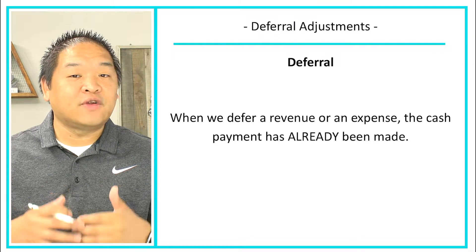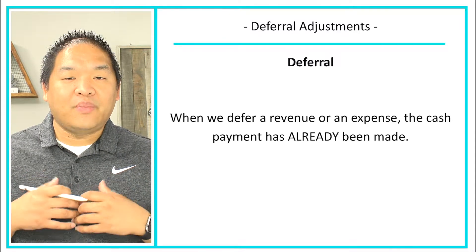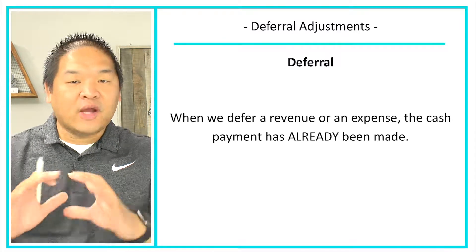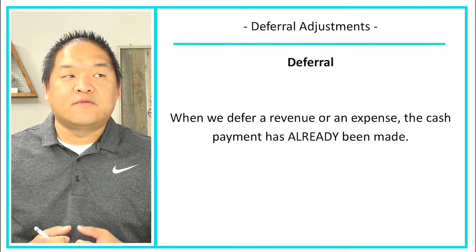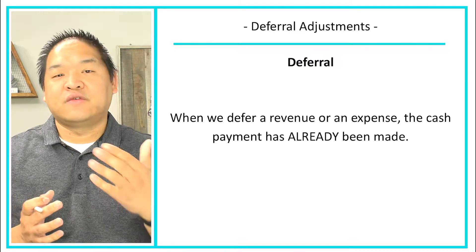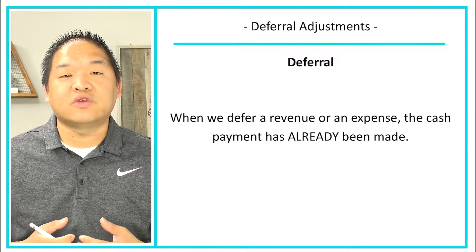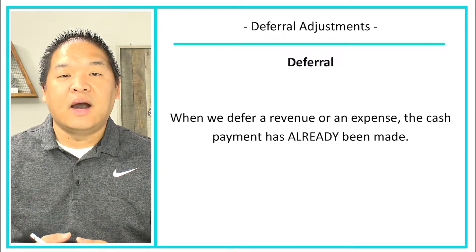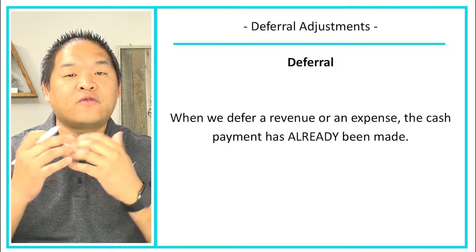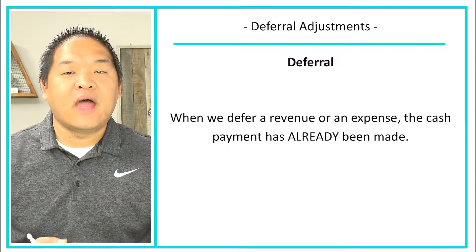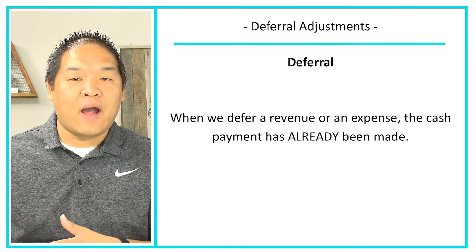On the deferred expense side, the same thing occurs — we will pay upfront for an expense that we are going to incur, either from a service that a vendor is going to provide to us or a product they're supposed to deliver. We pay for it upfront, which means the cash goes first, and then the expense or the product delivery happens later on.